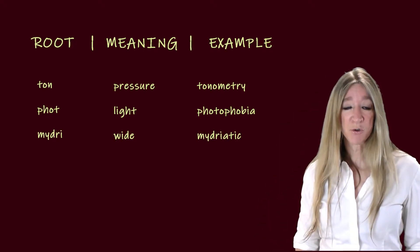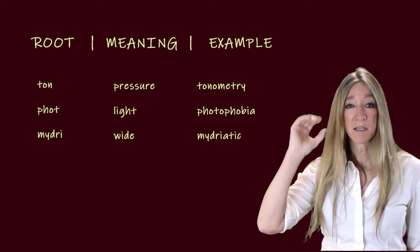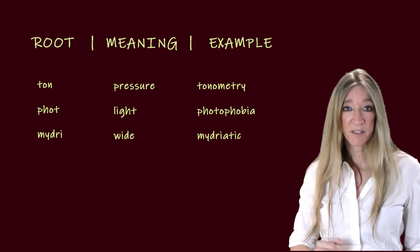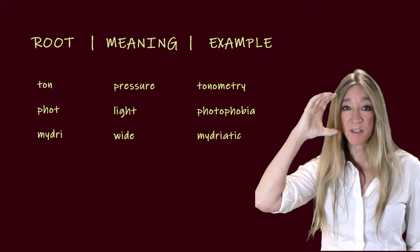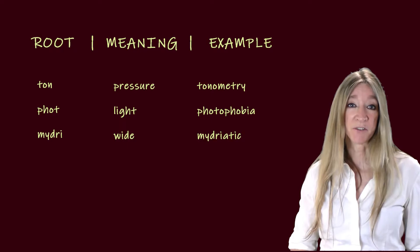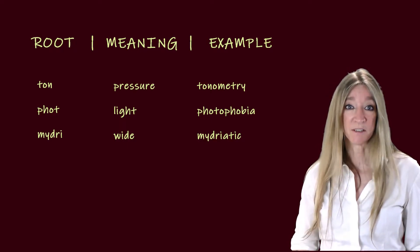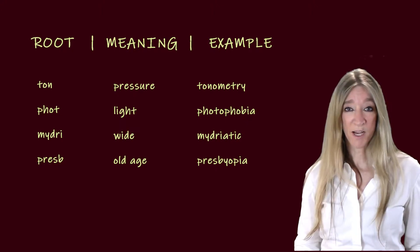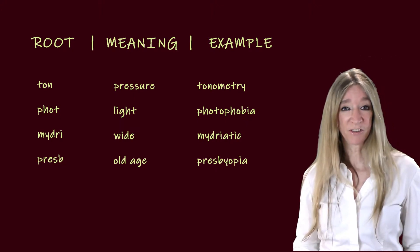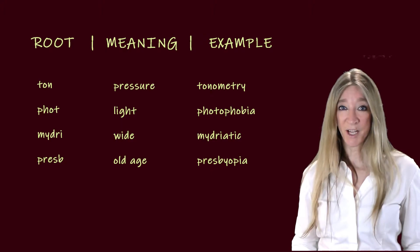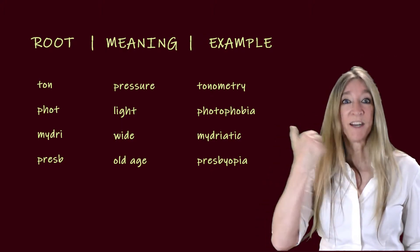The next root, mydri, meaning wide. Mydriasis is a widening, an opening of the pupil — a very large pupil — and this can be the result of a disease or a drug such as cocaine or methamphetamine. The next root, presb, meaning old age. An example: presbyopia, which is old age vision.